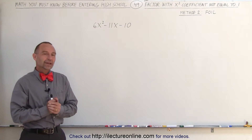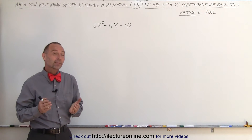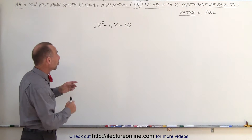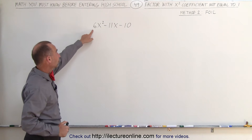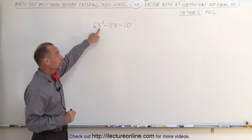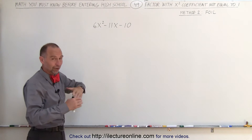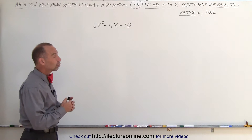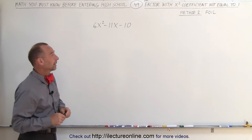Welcome to ElectronLine. A second method by which we can solve a trinomial where the coefficient of the x squared term is not equal to 1, and here we're trying to factor this trinomial, is called the FOIL method.